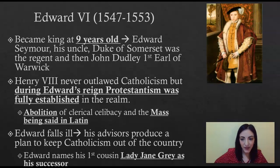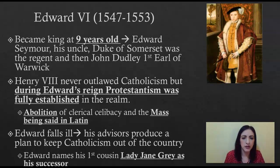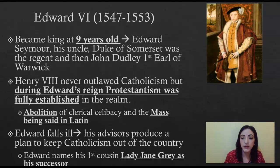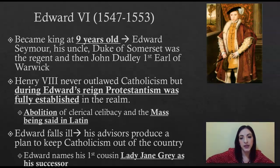Edward VI is only king for a very short period of time. He becomes king at nine years old when his father dies. Being nine, he's not old enough to rule by himself, so he has a couple of regents — his uncle Edward Seymour, and later John Dudley. During his reign, you see a huge shift and move away from Catholicism. Catholicism was never officially outlawed, but Protestantism is fully established in the realm. You have teachings from Martin Luther and John Calvin popping up across the world, but in England it really takes root. You also see Protestantism pop up in France as well.